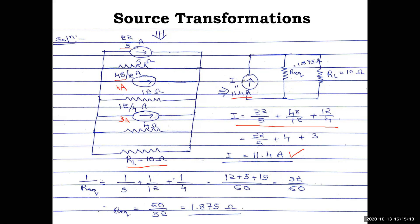Next, we calculate the equivalent of the three parallel resistances, excluding RL. Using 1/R_eq = 1/5 + 1/12 + 1/4, taking LCM of 60: we get 12/60 + 5/60 + 15/60 = 32/60. Therefore R_eq = 60/32 = 1.875 ohm.